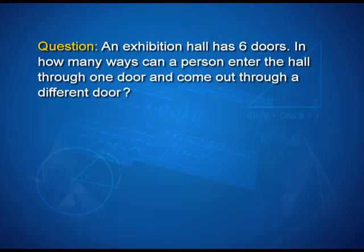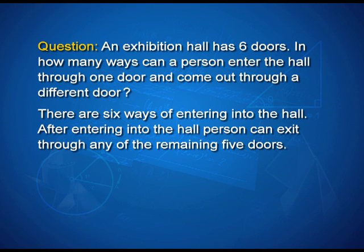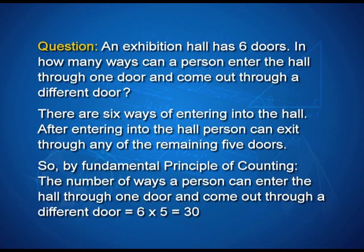Here is another example. An exhibition hall has 6 doors. In how many ways can a person enter the hall through one door and come out through a different door? If a person enters through one particular door, for exiting he has 5 different possibilities, and there were 6 possible entrances. So the entrance can be done in 6 ways, whereas the exit can be done only in 5 ways. Therefore, by the fundamental principle of counting, the total number of possible ways will be 6 times 5, which is 30.